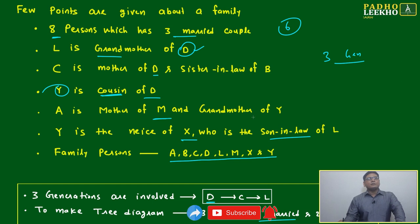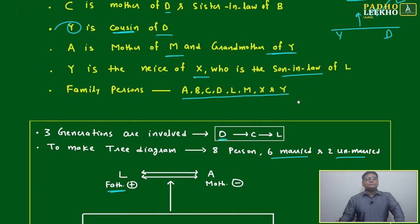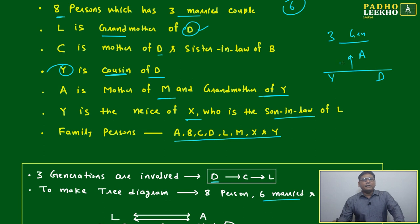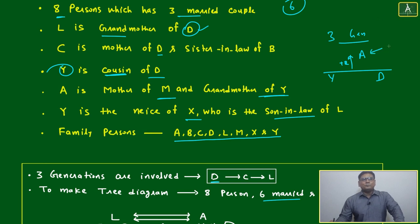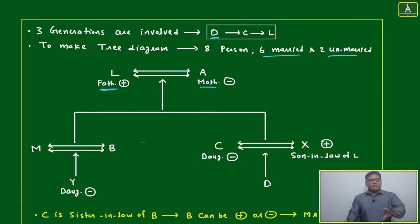A is the mother of M and the grandmother of Y. Y and D are in the same generation. Since A is the grandmother of both Y and D, and there are only three generations, A must be the wife of L. So L and A are the first generation — husband and wife — at the top.